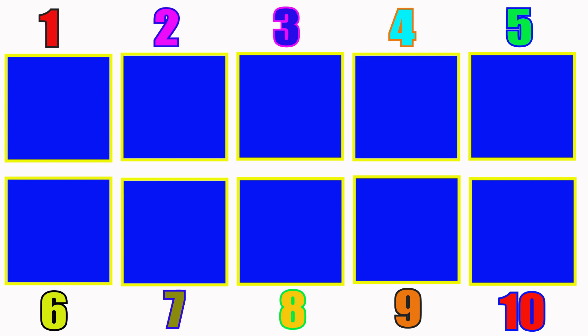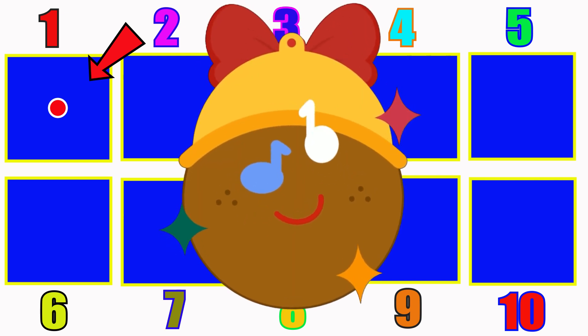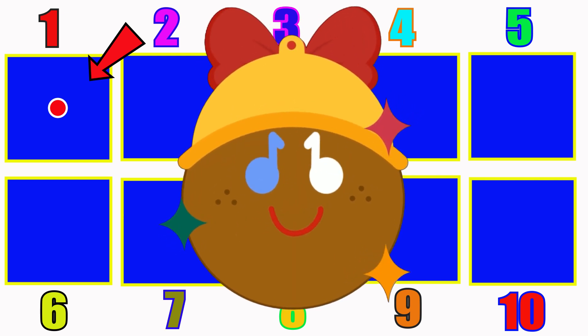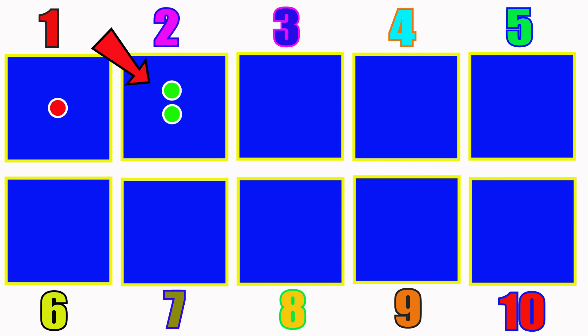Now we'll begin with the number 1. Look at this square. It has just one dot inside it. Can you say 1? Great job! Now let's move on to the next square. In this square we have 2 dots. Say 2. 1, 2. Well done!